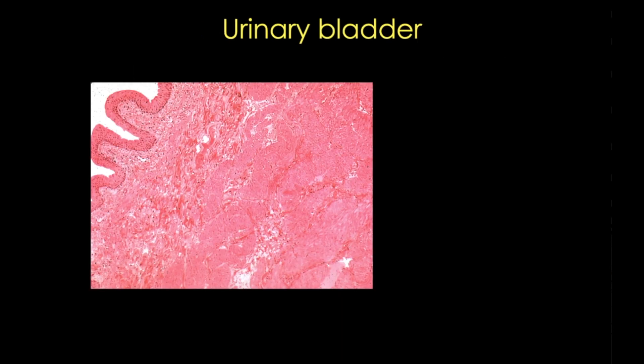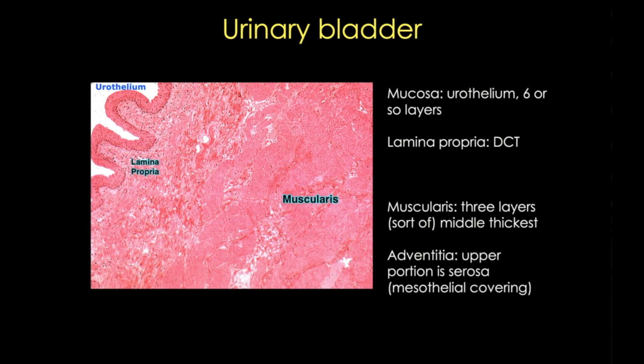The urinary bladder resembles the ureter, but it has a thicker layer of urothelium. Like the ureter, it has a lamina propria, muscularis, and adventitial layers. Unlike the ureter, the bladder does contain a submucosa layer of dense irregular connective tissue.